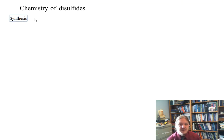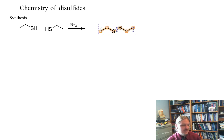In a previous video, I talked about the synthesis of disulfides from thiols by mild oxidation conditions. For example, we can synthesize a disulfide from ethane thiol just by reaction with the mild oxidizing agent bromine.